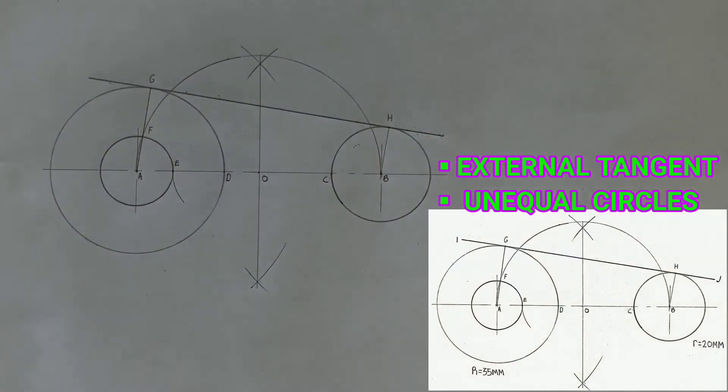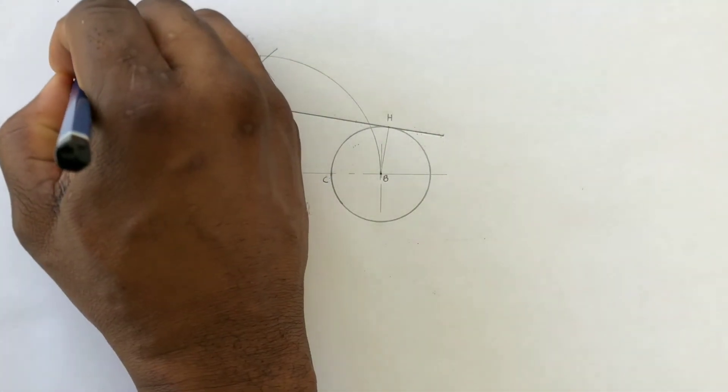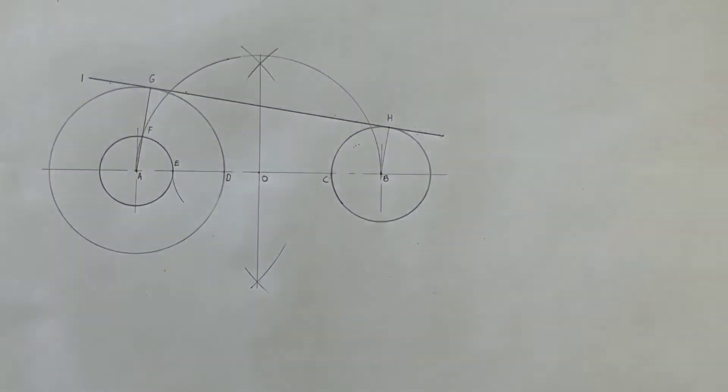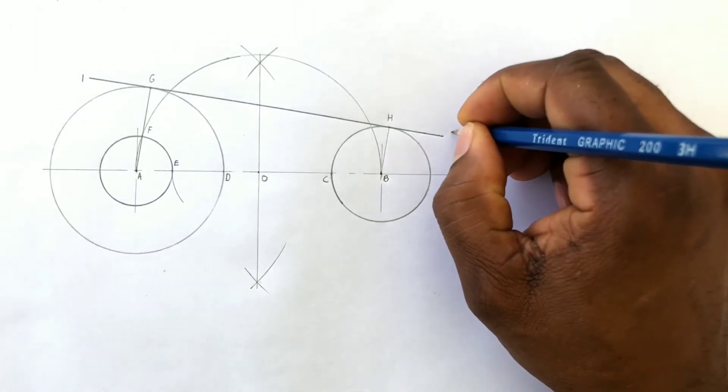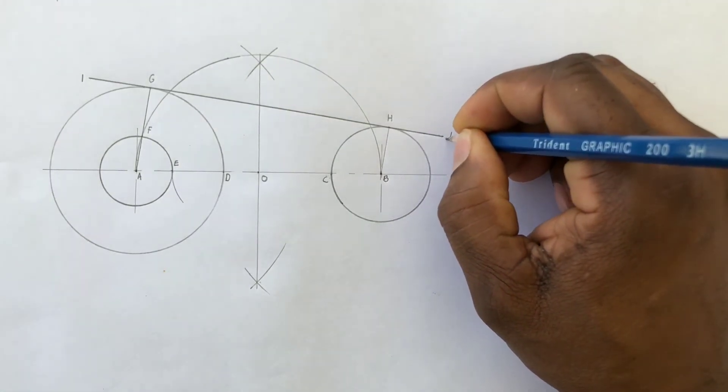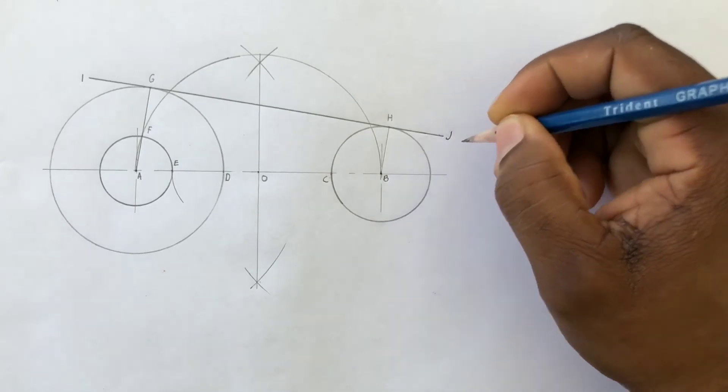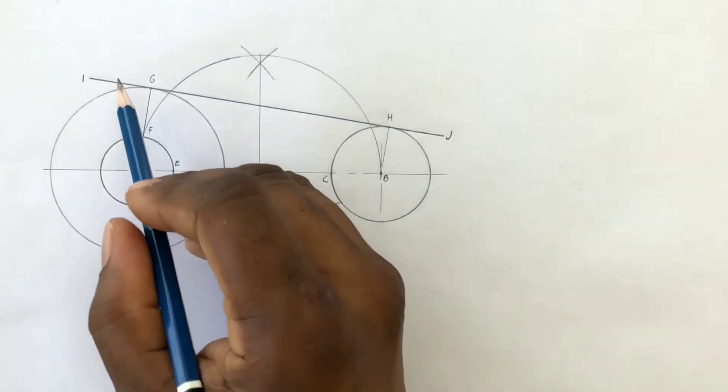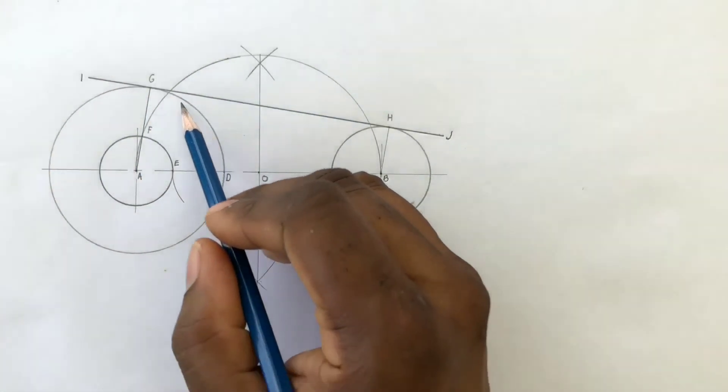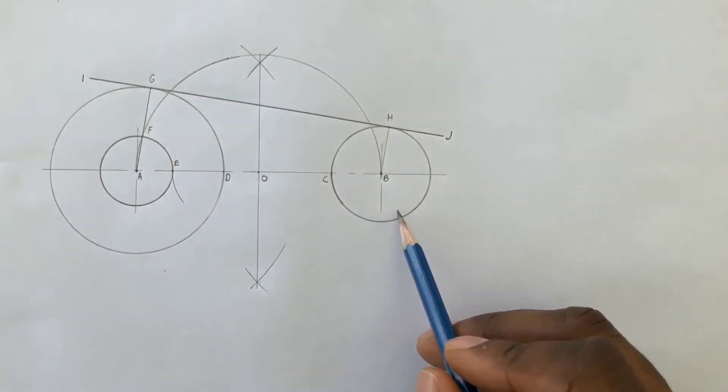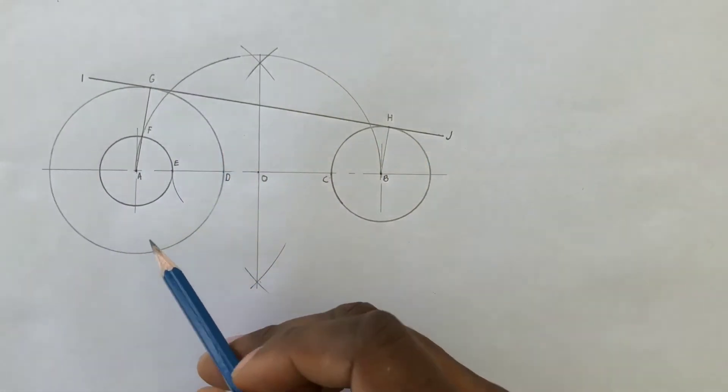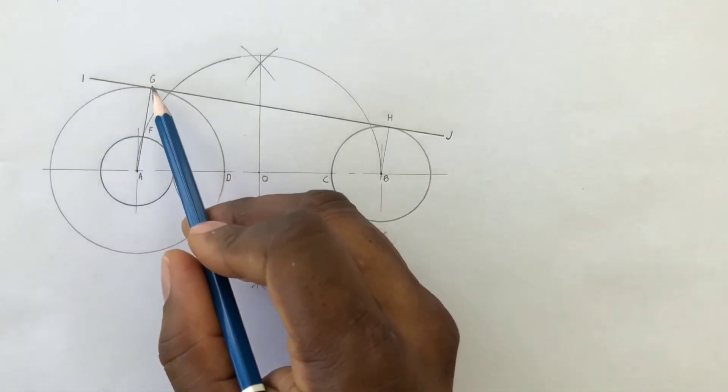Label our tangent I, J. Now to two unequal circles of different diameter we have just drawn our required tangent IJ. This tangent is an external tangent falling on the top of both circles.